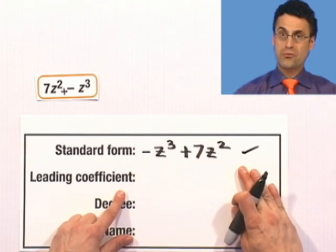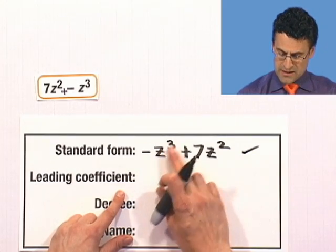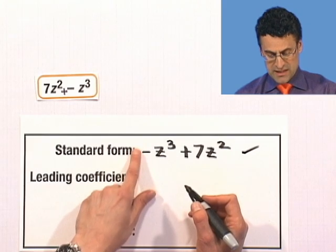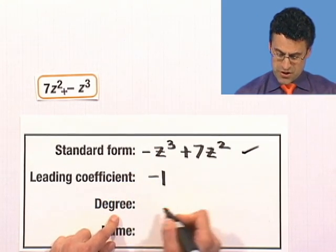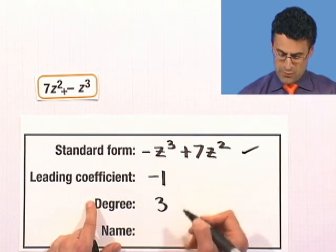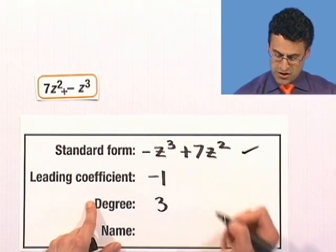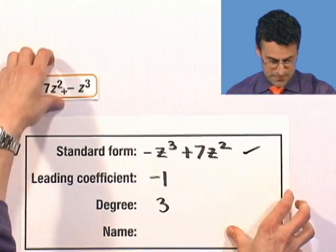What's the leading coefficient? Well, now that it's written in standard form, I look at the coefficient on the highest term, which in this case, z³. What's the coefficient? It's negative 1. What's the degree of this? It's the highest power we see, which is a 3. And what's the name of this thing? There are two terms. So this is actually a binomial. So there we have it.